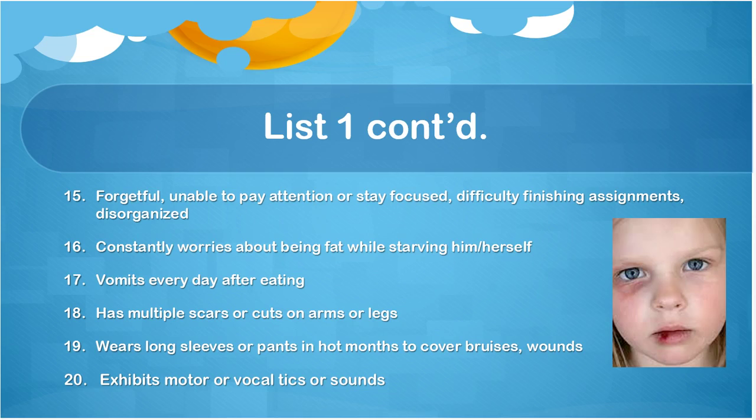Forgetful, unable to pay attention or stay focused, difficulty finishing assignments. Disorganized. Constantly worrying about being fat while starving him or herself — a very distorted body image. Vomiting after eating. Having multiple scars or cuts on arms or legs. Self-mutilation is not necessarily a sign of potential suicide, but it definitely is a danger sign that needs to be reported.